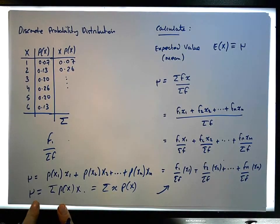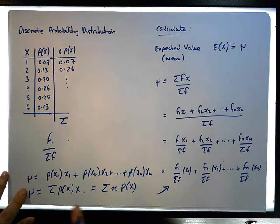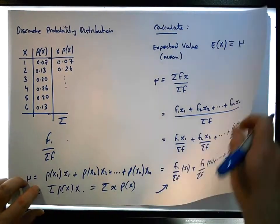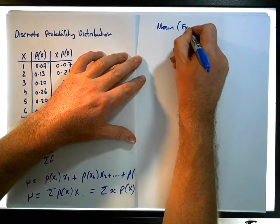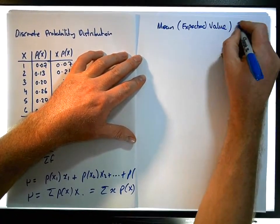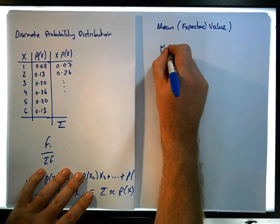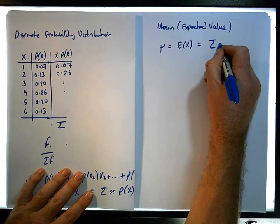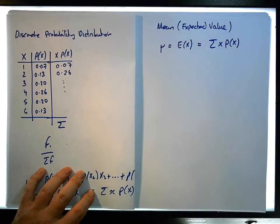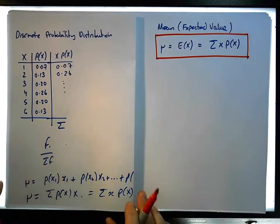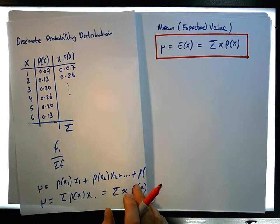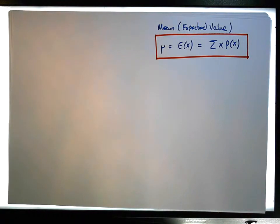This video was about figuring out where the formula comes from, so let's write it down. The first formula is for the expected value of a discrete probability distribution: the mean or expected value is μ = E(x) = Σ[x · P(x)]. Each observation is multiplied by its respective probability. This is a direct consequence of the mean formula from a discrete frequency distribution.